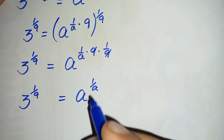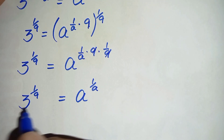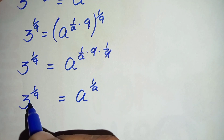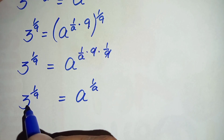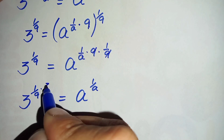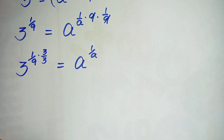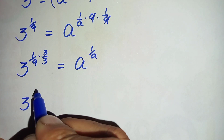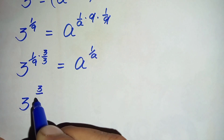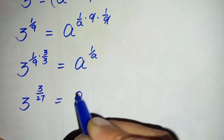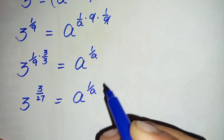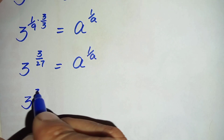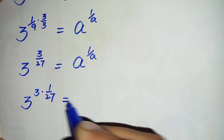Now on the right hand side we have a in both the base and the power. We will try to make the left hand side look similar — meaning the base and the number in the denominator of the power are the same. To do that, we will multiply and divide by 3 in the power on the left hand side. This becomes 3 raised to the power 3 times 1 over 3, divided by 9 times 3, which is 27, equal to a raised to power 1 over a. We can further write this power as 3 raised to power 3 times 1 over 27 is equal to a raised to power 1 over a.